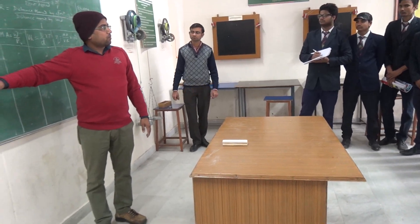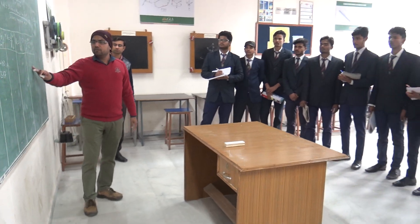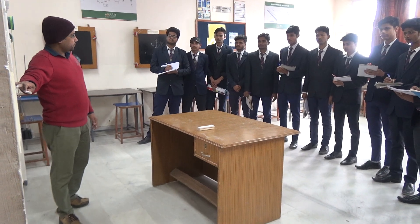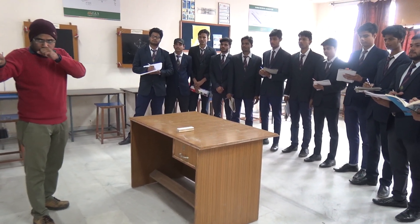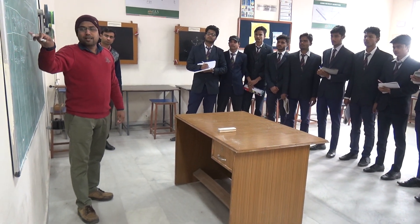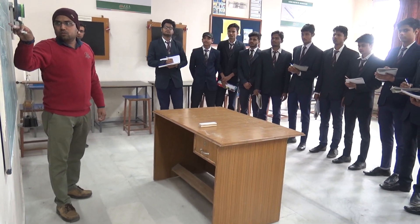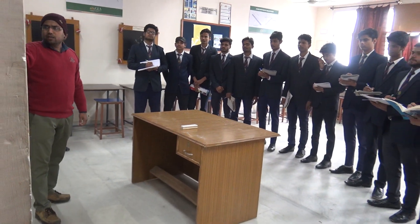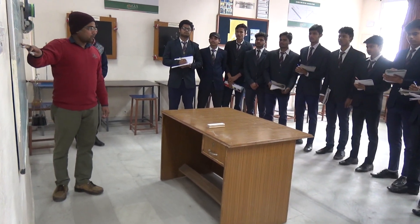This is the table which we are going to use for finding the mechanical advantage, velocity ratio and efficiency, for which we are using these readings as load and effort. This is the amount of load W used in this formula, and this is the amount of effort P. With the help of W and P, by dividing these two values, we are getting the mechanical advantage. After finding the mechanical advantage, we can find the velocity ratio using this formula.